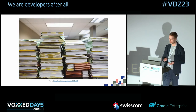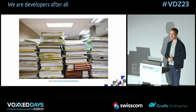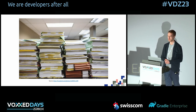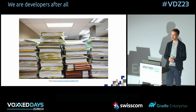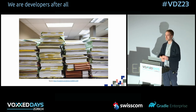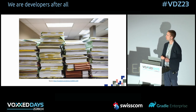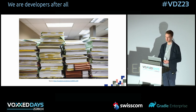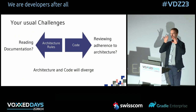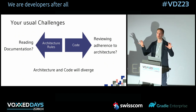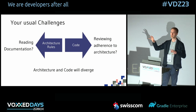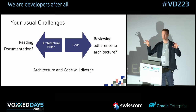Why is software created this way? Usually we would create a nice architecture before we start coding — we define layers, we define module dependencies, and everything should be rock solid and nothing should collapse in the end. But somehow the code does not reflect the architecture. The defined architecture and the code will eventually diverge.